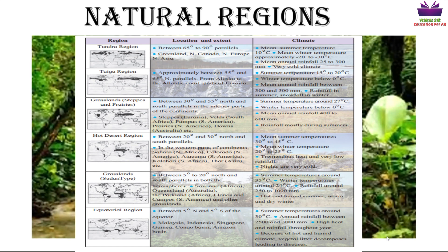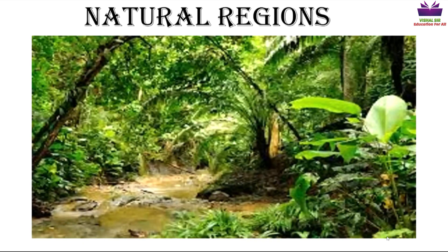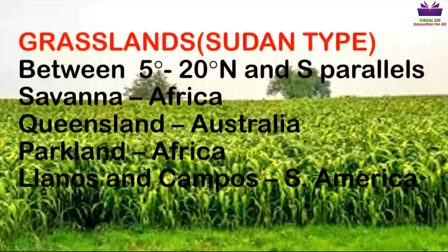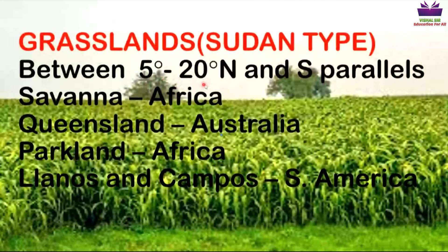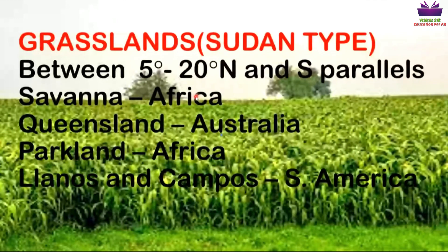The first topic is the grasslands of the Sudan region. These grasslands are located between 5 degrees to 20 degrees north and south parallels, meaning they are found in both the northern hemisphere and the southern hemisphere.